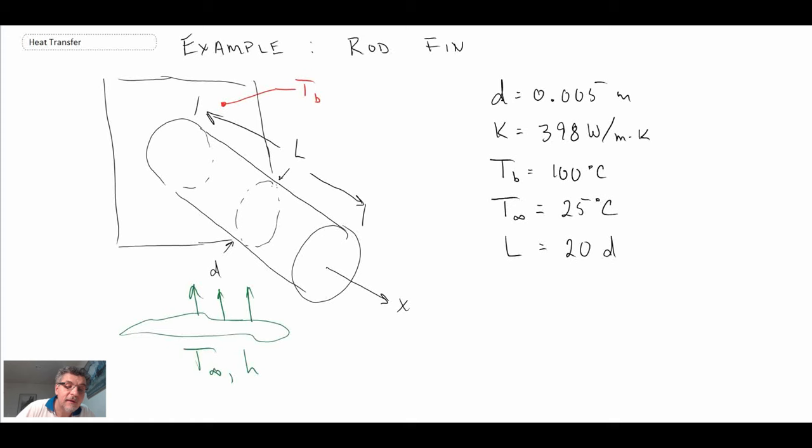And what we're going to do, we're going to consider this for two different convective environments. Convective environment 1 will be 100 watts per meter squared degrees C. And convective environment 2 is 1000 watts per meter squared degrees C. So we're going to take these numbers, we're going to plug them into the three different cases that we looked at.